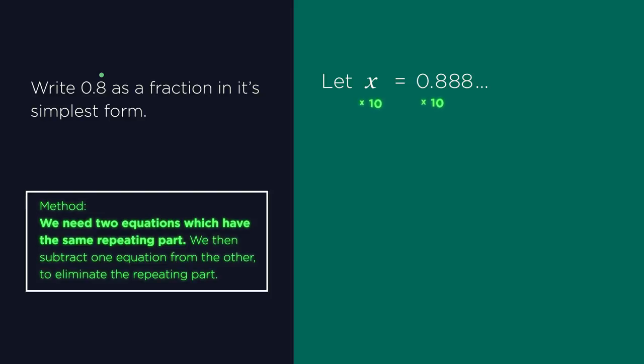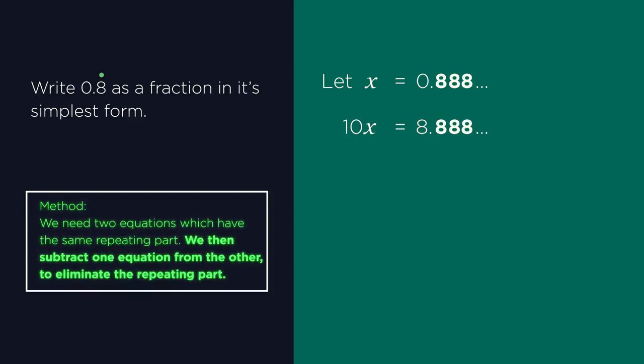So here we multiply both sides by ten, and we get ten x equals 8.888 and so on. So the repeating eight has moved to the left of the decimal place. Now we subtract x from ten x to eliminate the repeating 0.888 part. So we get ten x minus x equals 8.888 minus 0.888. So 9x equals 8. A little bit of rearranging. Divide both sides by 9. And x equals 8 divided by 9.